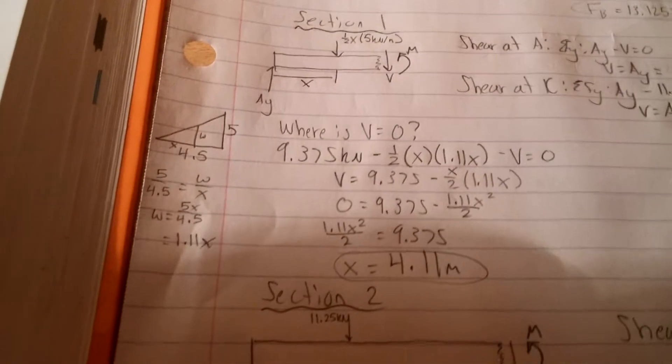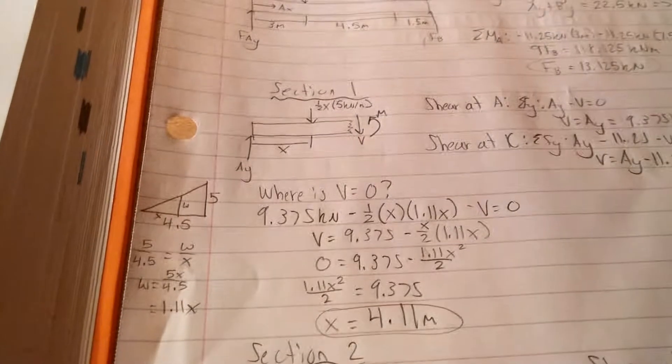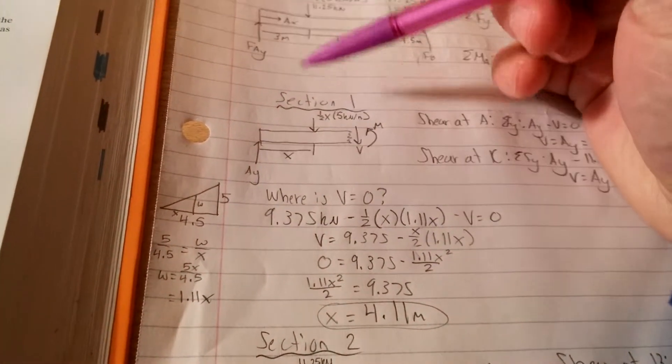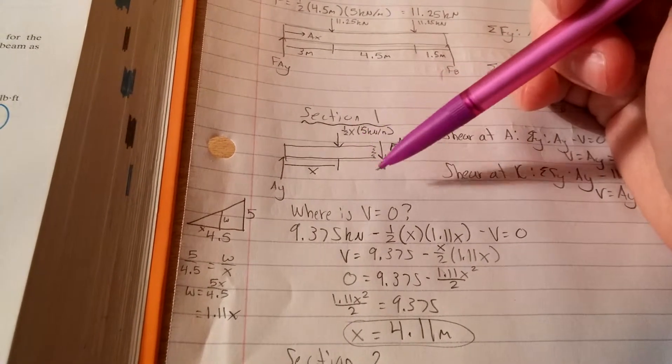Like I wrote over here, where is the shear equal to zero? Well, we have some point we know between A and wherever C is, it's zero.